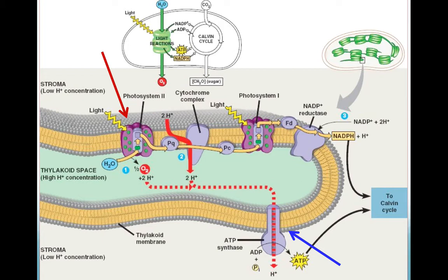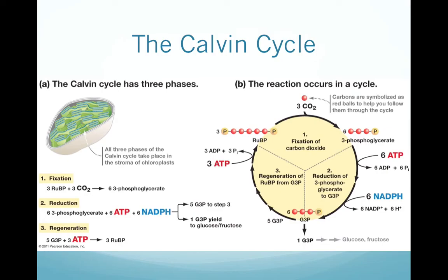Looking at the light reactions in more detail: photosystem II sits in the membrane, light hits it and energizes electrons, which pass down several proteins to photosystem I, generating a hydrogen ion gradient inside the membrane space. Water is split, generating more hydrogen ions and donating electrons to replenish photosystem II, while oxygen is released and diffuses out of the cell. Photosystem I accepts light energy to energize its electrons and donates them to NADP+, making NADPH, which carries electrons to the Calvin cycle. Hydrogen ions pass through ATP synthase, which uses that flow to attach a phosphate group to ADP, making ATP. Both ATP and NADPH then move on to the Calvin cycle.